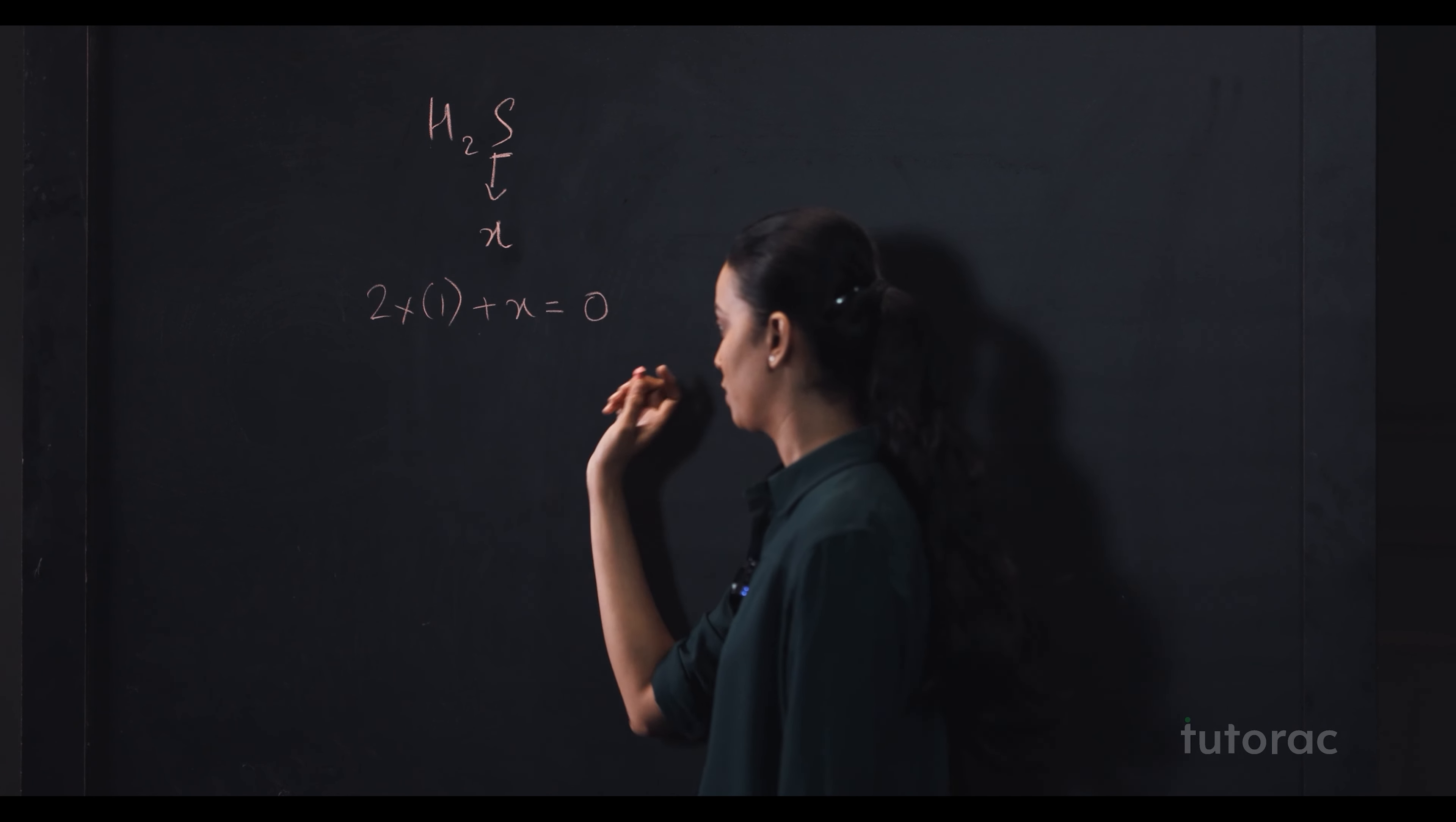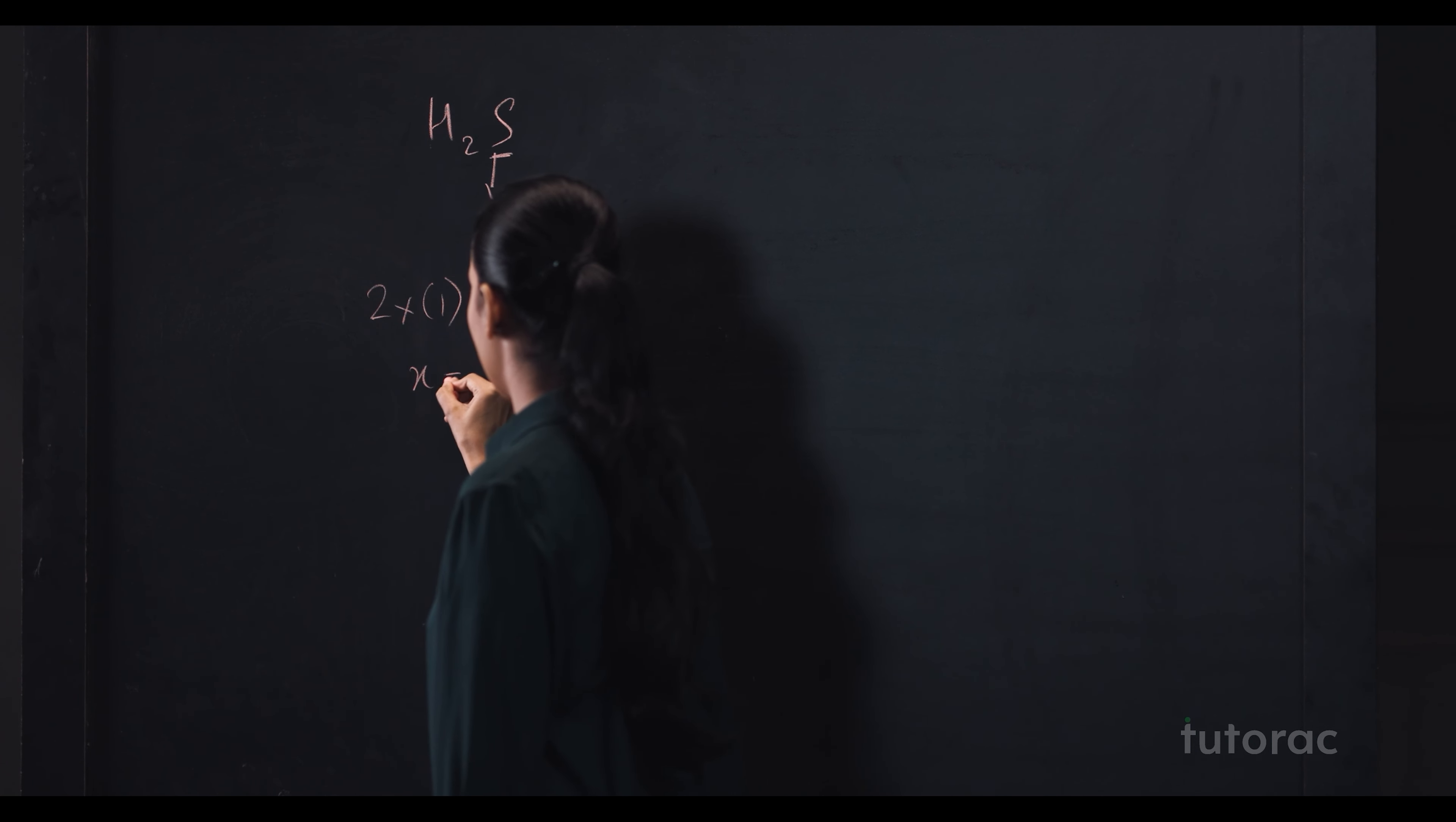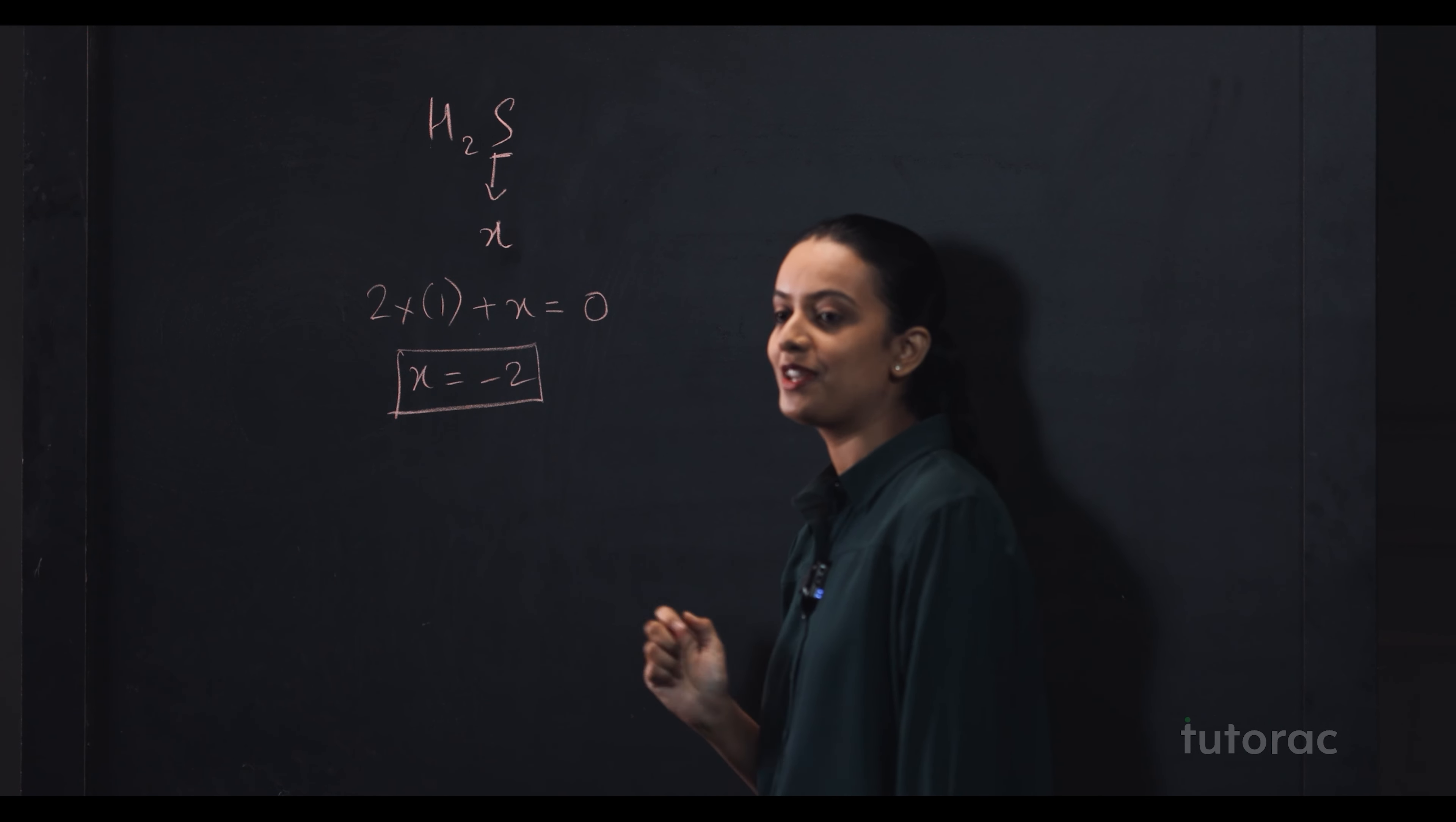and equate it to 0 as there is no overall charge on this compound. So, you get X equals to minus 2 and this is the oxidation number of sulfur.